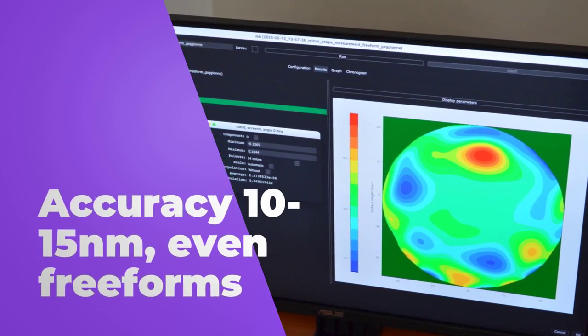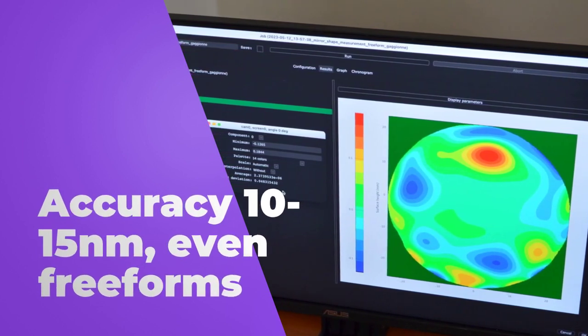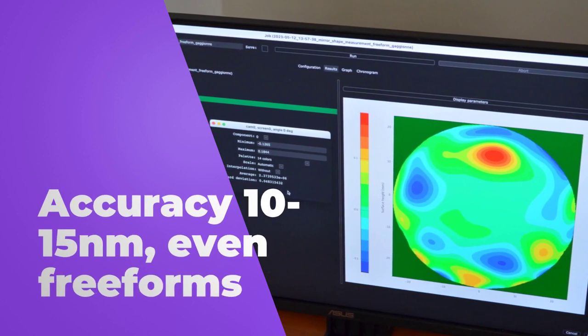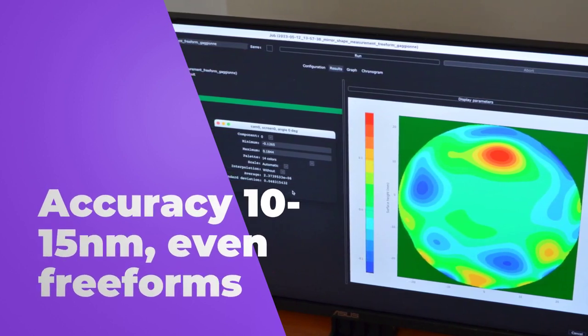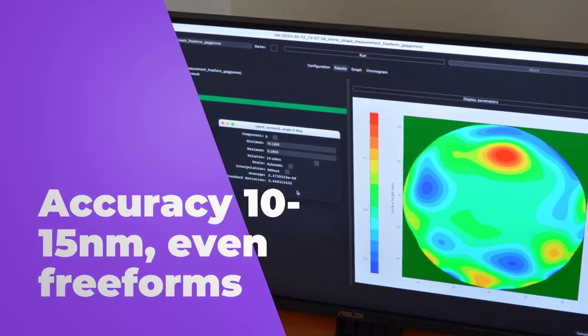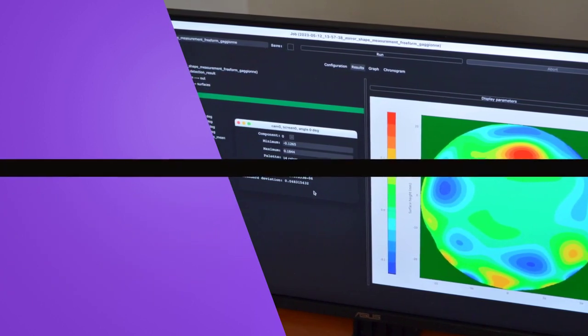Measurement results have been compared with those obtained from best-in-class interferometers like Zygo Verifier or Taylor-Hobson Lufoscan, with deviation consistently under 5 nanometers.